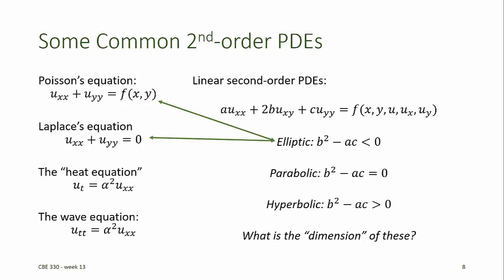Poisson's equation and Laplace's equation are both examples of elliptic PDEs, because a and c are equal to 1, while 2b is equal to 0. Notice there is no partial derivative with respect to x and y in either of these equations.